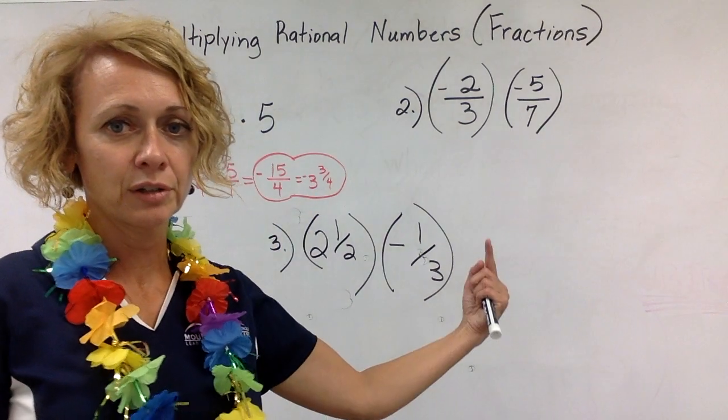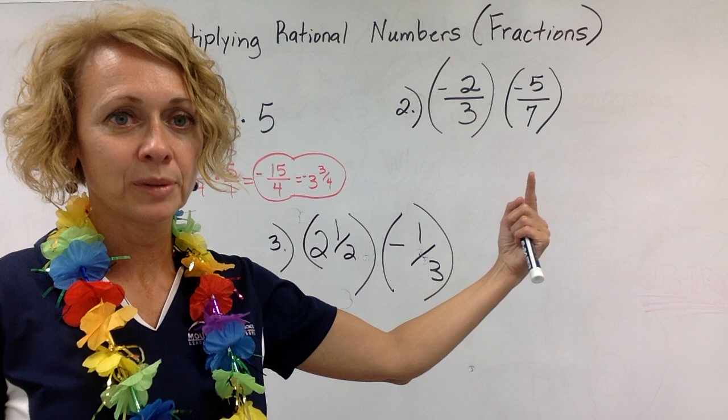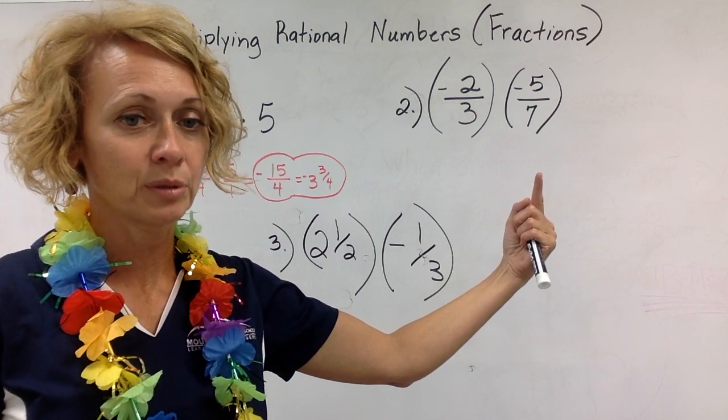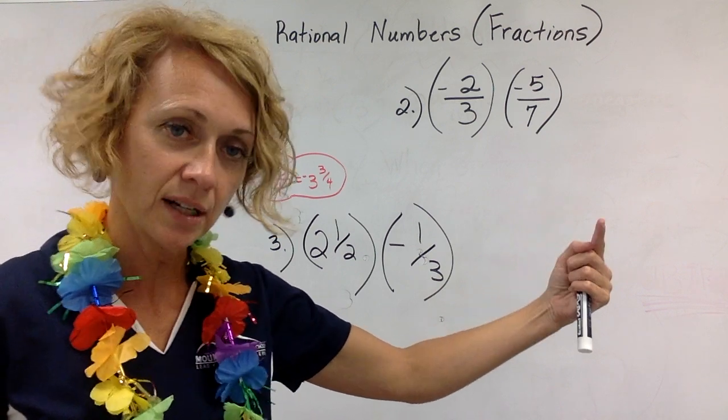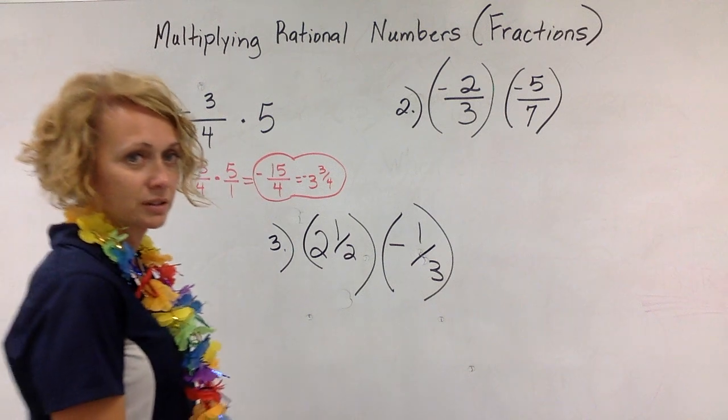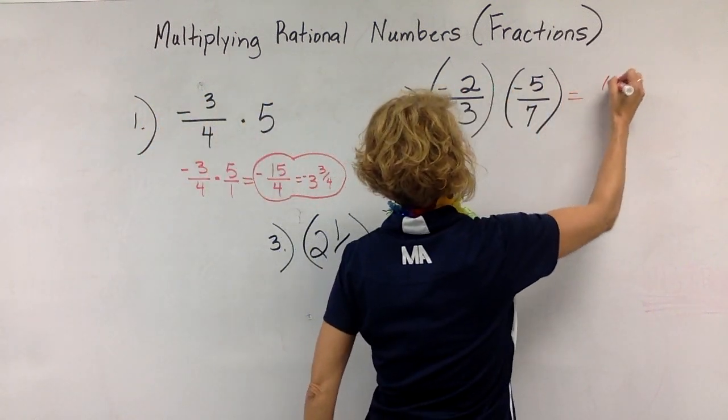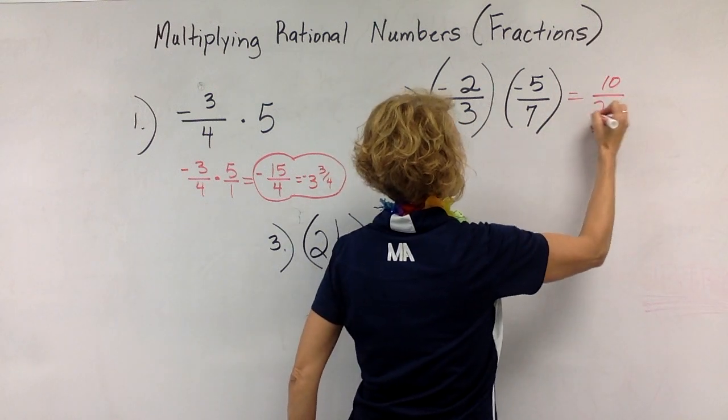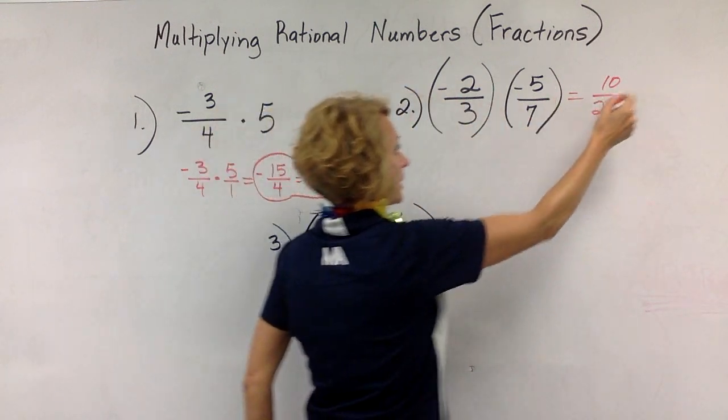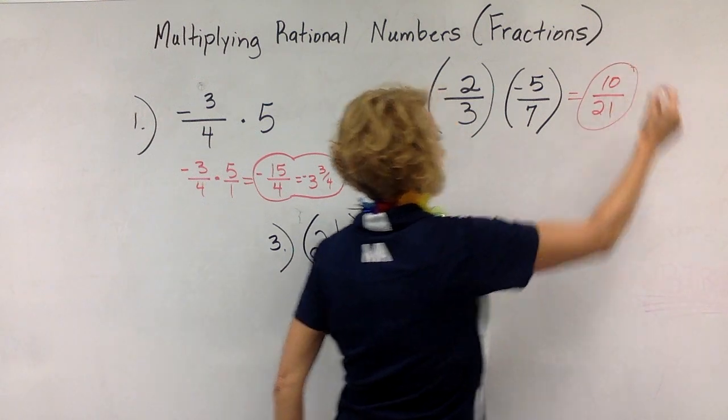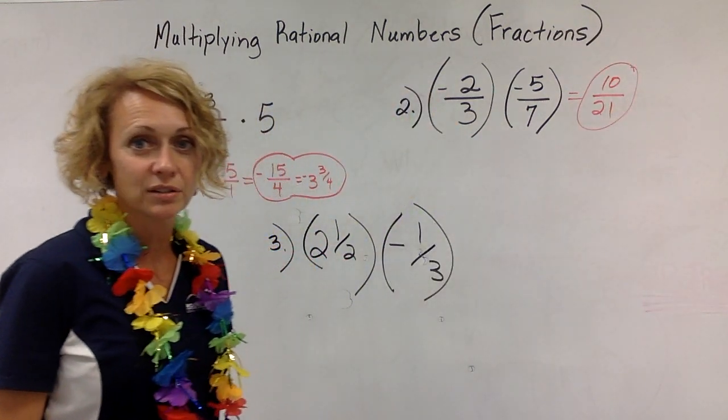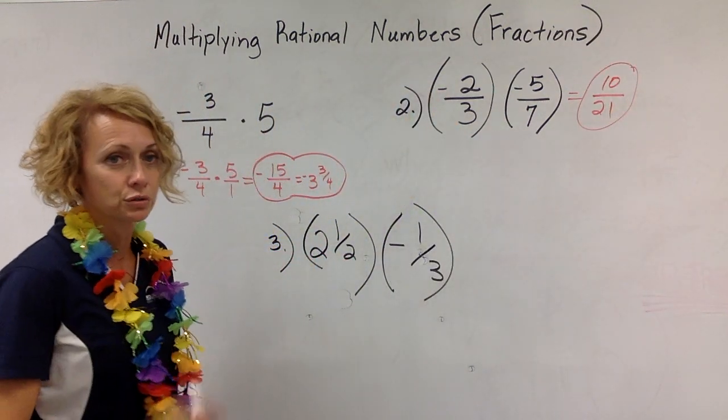Let's look at number 2. Fraction multiplication, they are both negative. Remember negative times a negative is a positive. Remember that from Stand and Deliver. 2 times 5 going straight across gives me 10. 3 times 7 going straight across gives me 21. Negative times a negative is a positive. I check to see if these can be simplified and it cannot. So that final answer is 10 over 21.